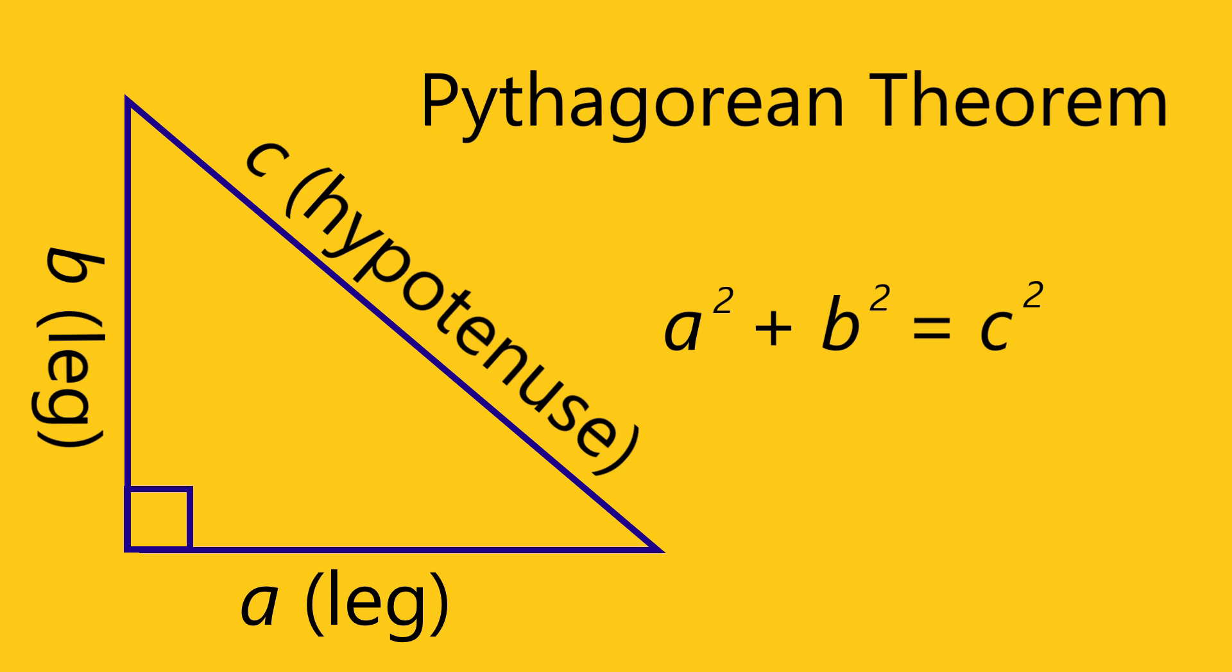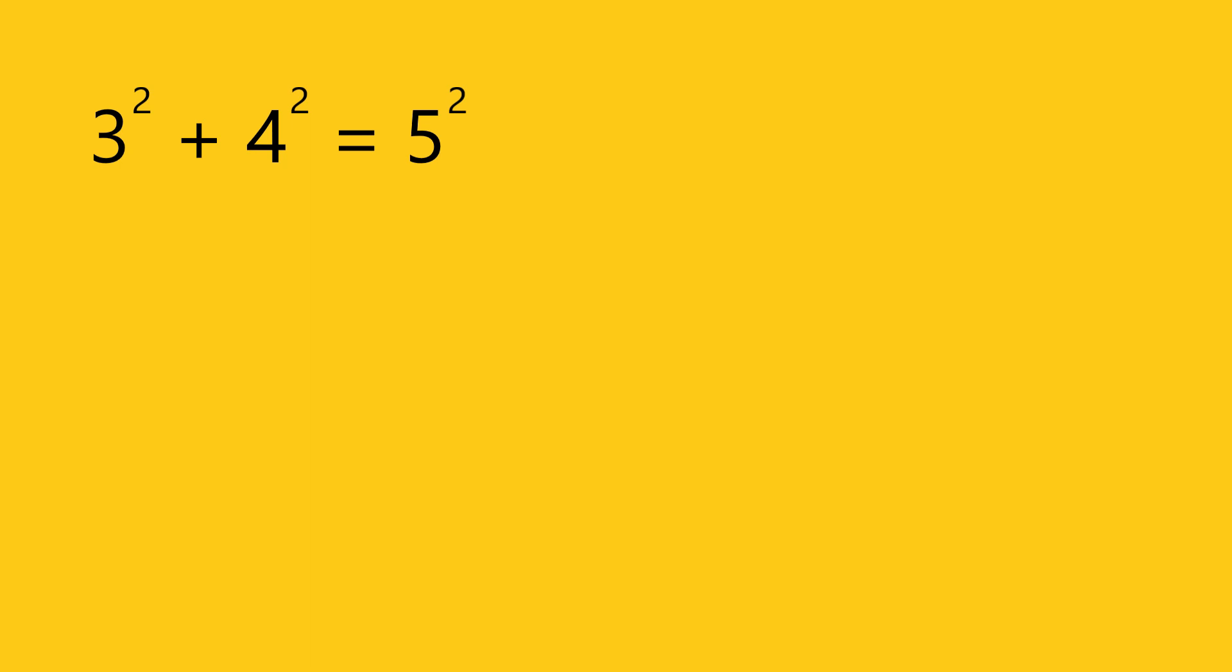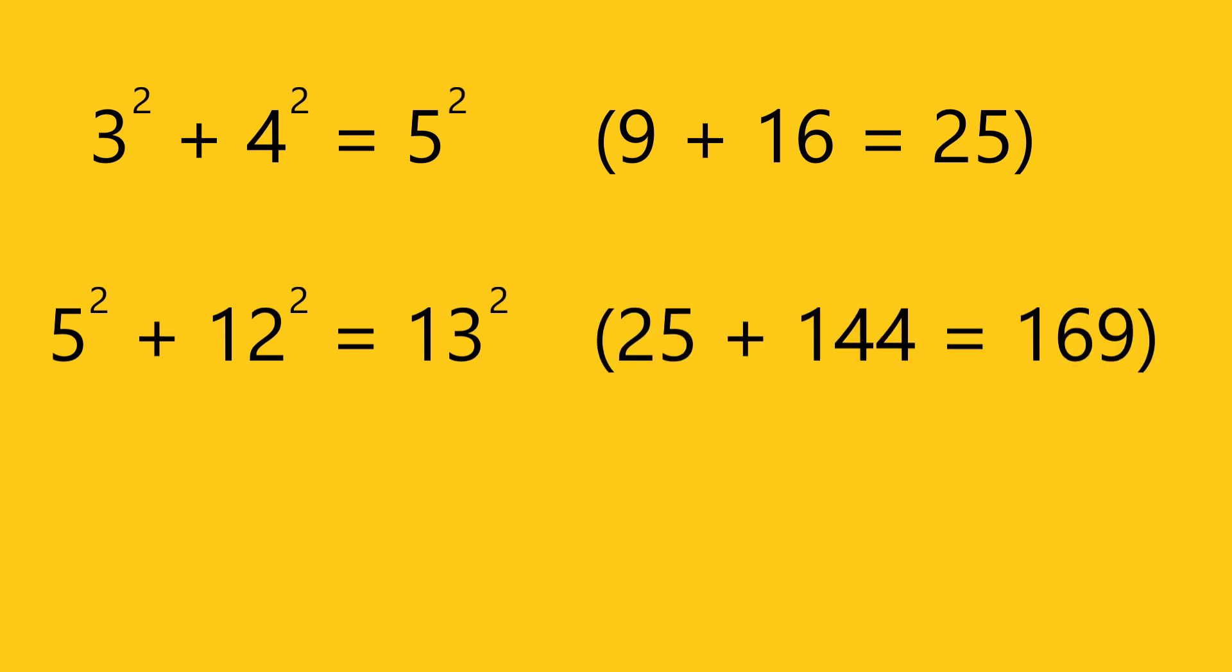There's an infinite number of integer solutions to this equation where each of a, b, and c are integers. For example, 3 squared plus 4 squared equals 5 squared, or 9 plus 16 is 25. Or 5 squared plus 12 squared equals 13 squared, which is 25 plus 144 is 169. Or 7 squared plus 24 squared equals 25 squared, or 49 plus 576 equals 625. And so many more.